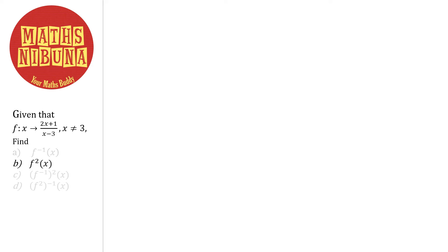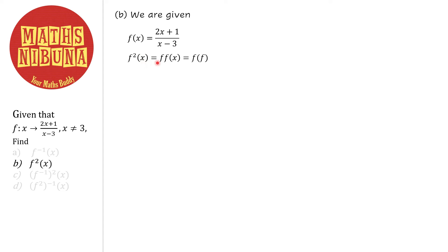Now we go to question b — finding f²(x). We go back to f(x) = (2x+1)/(x-3). Note that f²(x) is actually f(f(x)) — you cannot simply square it. This is not f squared; it means f is applied two times. So f²(x) = f(f(x)), and we put f inside the bracket as the input.